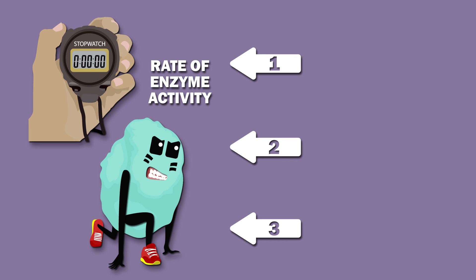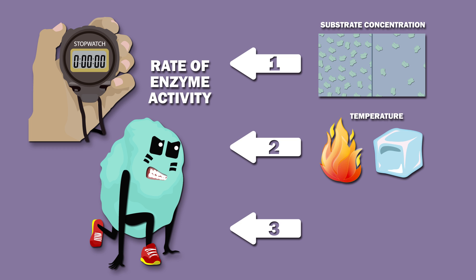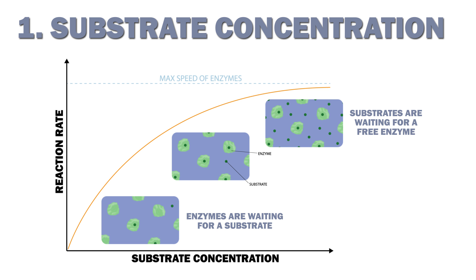Three important factors which impact the rate at which enzymes catalyze reactions are substrate concentration, temperature, and pH. Substrate concentration is important because at very low concentrations, many enzymes are just waiting around for a substrate. At high concentrations, all the enzymes are hard at work, and the extra substrates are waiting around for a free enzyme. So as substrate concentration increases, the amount of enzyme activity saturates, as shown in this graph.